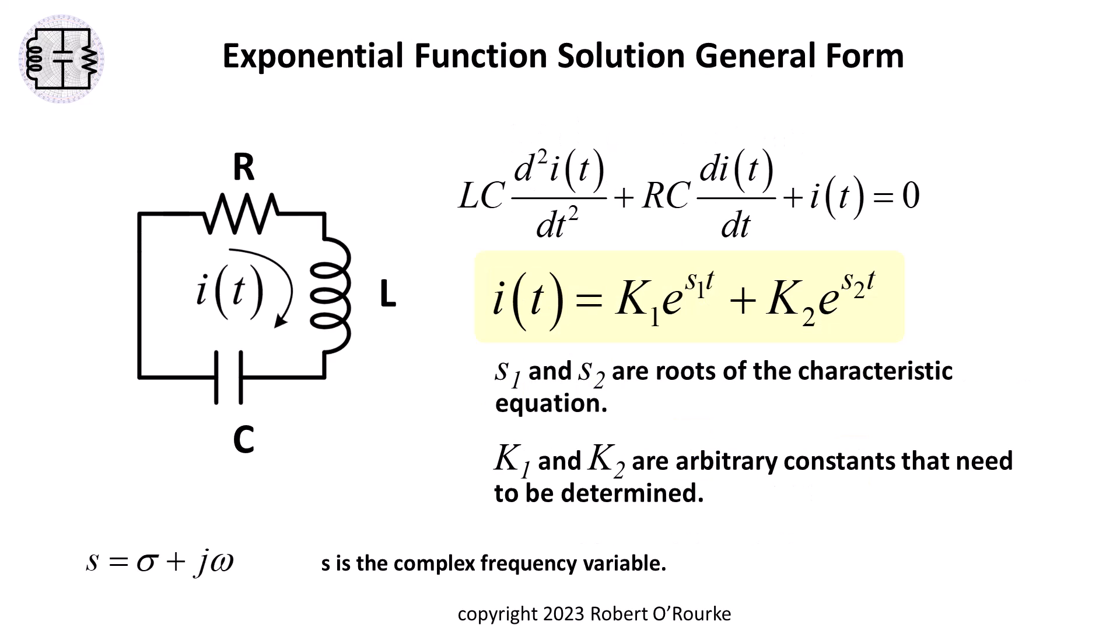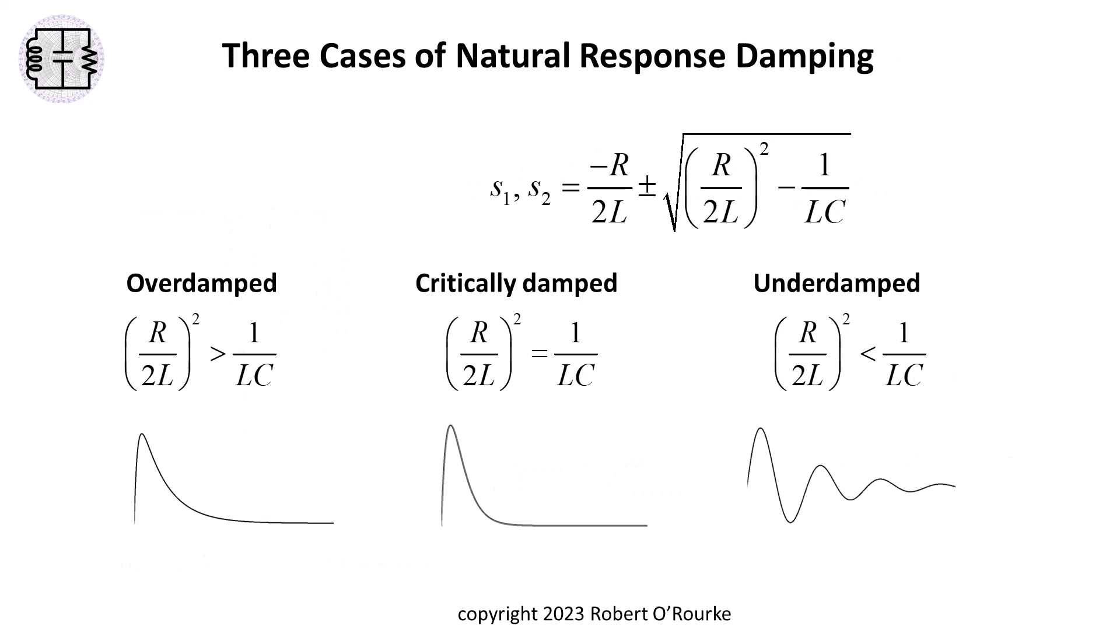K1 and K2 in the general form of the differential equation solution are constants which will need to be calculated. Different possible values for resistance, capacitance, and inductance determine the response case for the circuit.